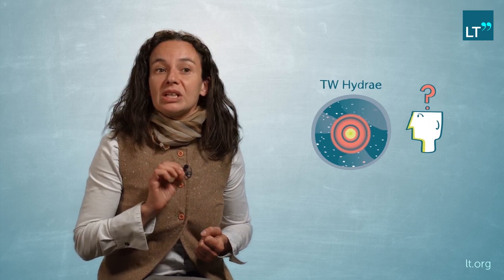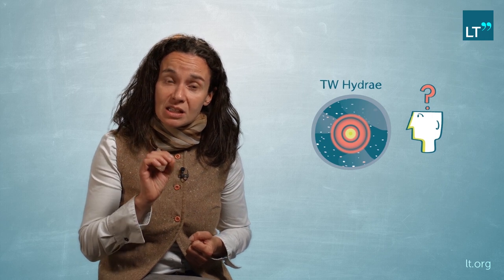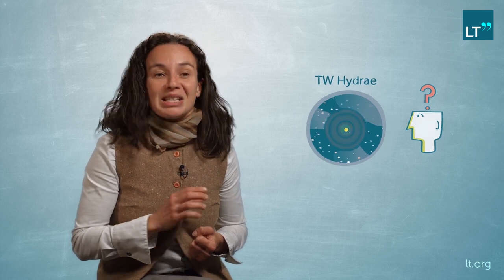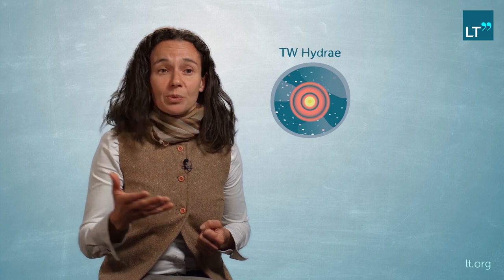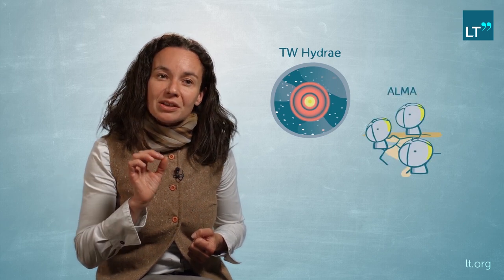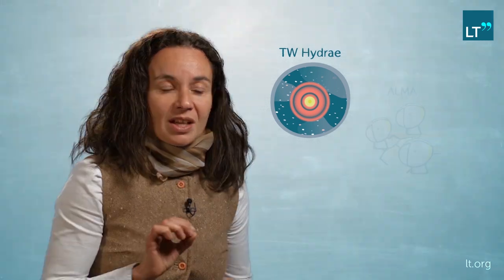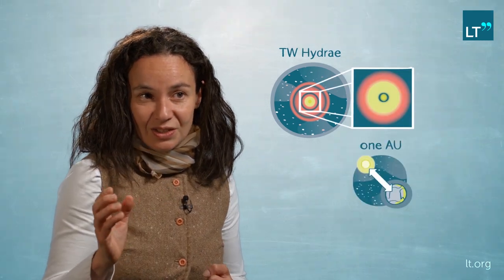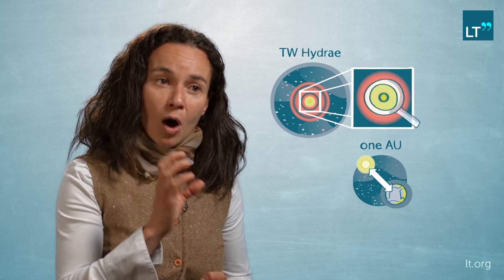So I am specifically interested in understanding the dispersal mechanism. And TW Hydra, with the new observations that have come online from ALMA, shows a very interesting feature. It has at the centre, at about 1 AU, so the distance of the Earth to the Sun, it has a hole.